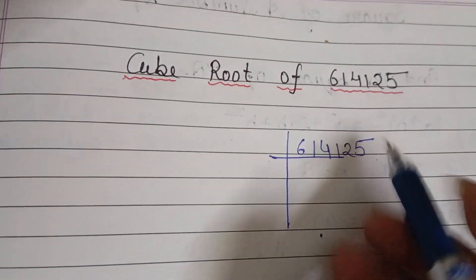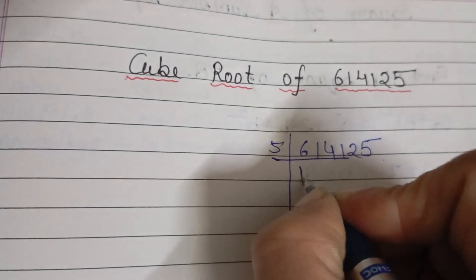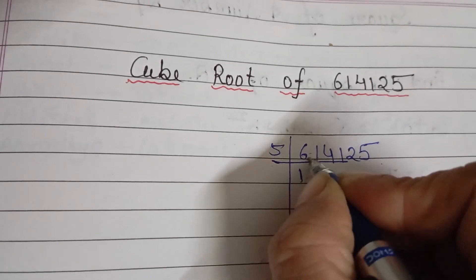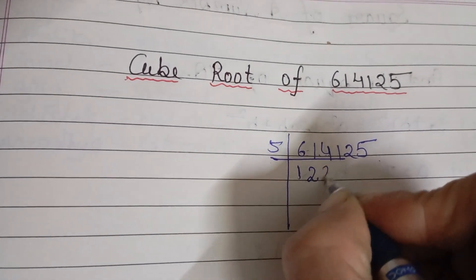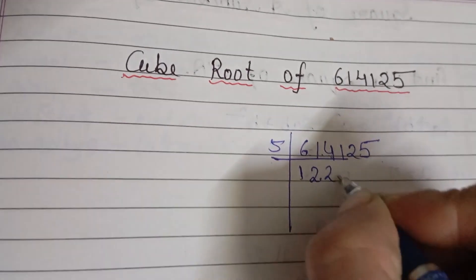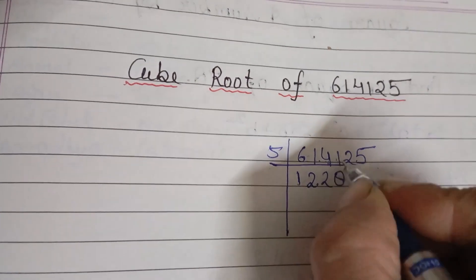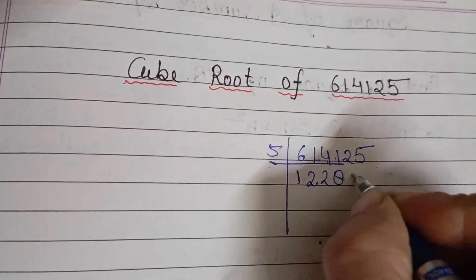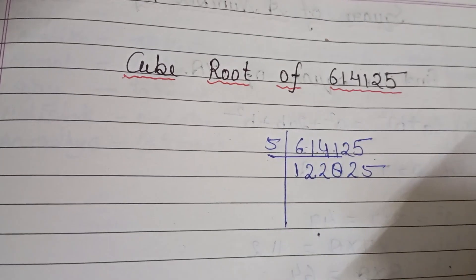It is divisible by 5, so divide by 5. 5 into 5 is 5, 5 into 10 gives remainder 1, bringing down gives 114. Again, 5 into 10, remainder 4, then 41 — 5 eights are 40 — remainder 1. Then 12, 5 into 10 and 5, 5 is 25.